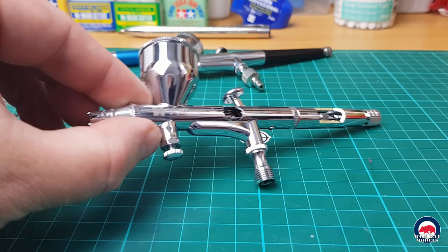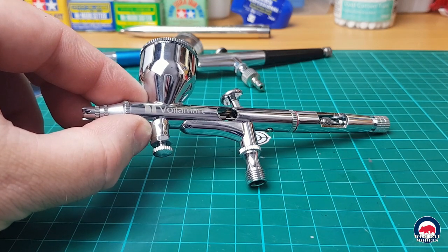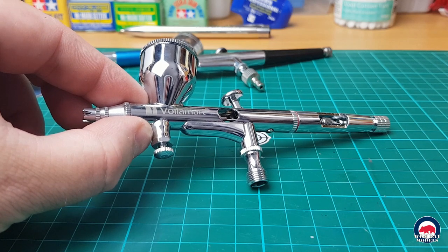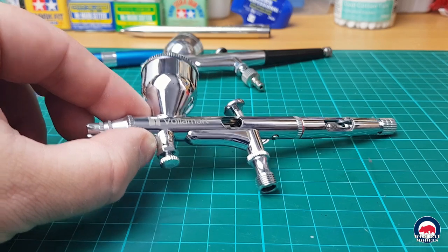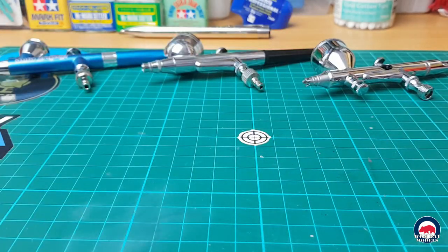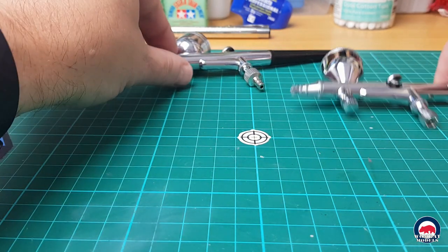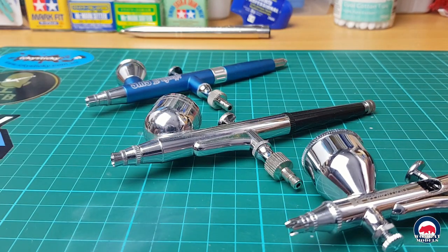And recently just picked up another cheap airbrush. So this one is a Wombat AB180, and it comes with a 0.2, 0.3 and 0.5 needle sets. And I've currently got that one fitted with a 0.5, so that's my heavy duty one. So they're three airbrushes that I use on pretty much everything.